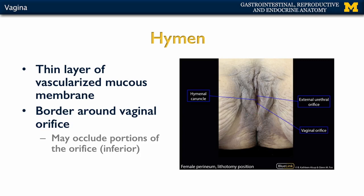One last thing to note is what's referred to as the hymen. This is a very thin, highly vascularized layer of mucous membrane that borders around the vaginal orifice — that opening of the vagina into the vestibule. Typically it covers only the inferior portion of the vaginal orifice, but there is considerable variability; it can occlude portions of the orifice or not.